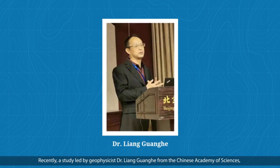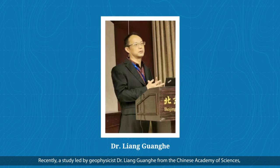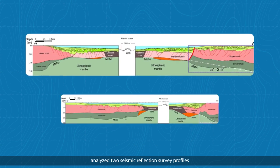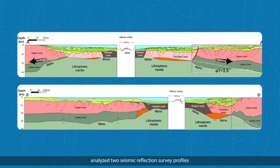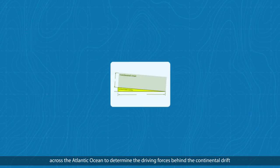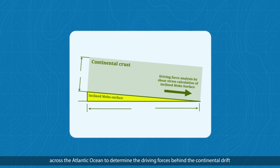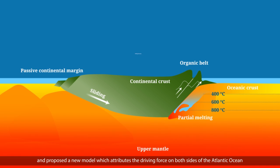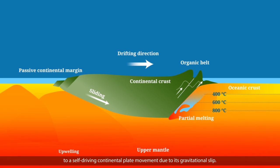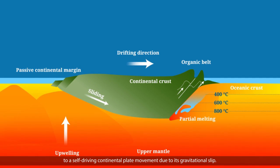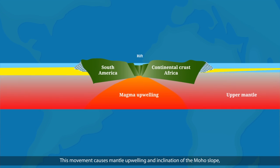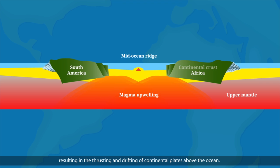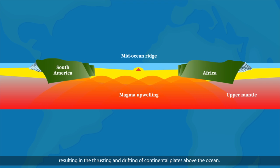Recently, a study led by geophysicist Dr. Liang Guanghe from the Chinese Academy of Sciences, published in Earth Science Frontiers, analyzed two seismic reflection survey profiles across the Atlantic Ocean to determine the driving forces behind the continental drift. The study proposed a new model which attributes the driving force on both sides of the Atlantic Ocean to a self-driving continental plate movement due to its gravitational slip. This movement causes mantle upwelling and inclination of the Moho slope, resulting in the thrusting and drifting of continental plates above the ocean.